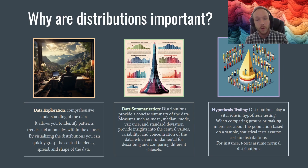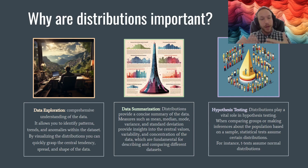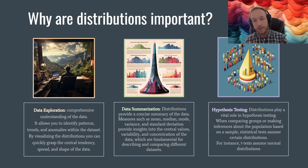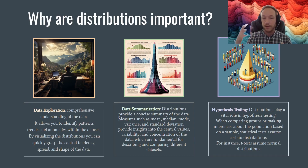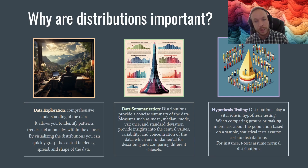Understanding distributions will also lead into hypothesis testing, which is very fundamental and has a lot to do with the samples and the randomness baked into our data set that we can't really see or observe but is there. The shape of a distribution will determine how we're going to perform hypothesis tests, so it's really important to understand the shapes of our distributions.